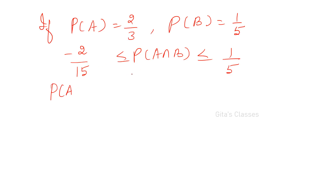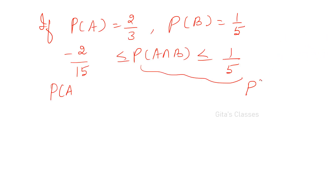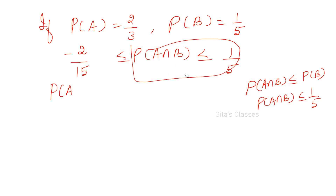I'll prove both parts separately. For the second part: since A∩B is a subset of B, P(A∩B) is definitely less than or equal to P(B). Since P(B) = 1/5, we get P(A∩B) ≤ 1/5. This part is done.